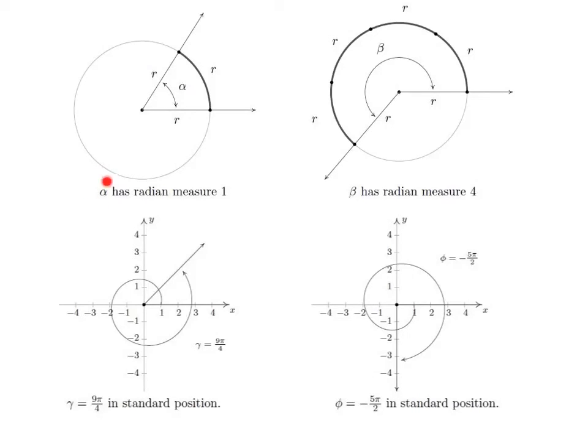So, here we have alpha, radian measure 1. So, if you have radius r, and the arc length is also r, what makes that is 1 radian. There's 1, 2, 3, 4 radians.